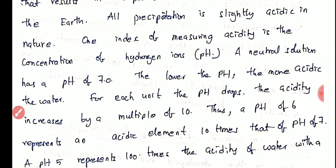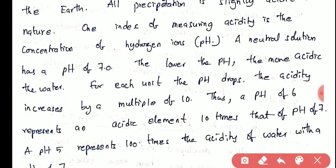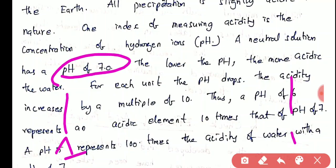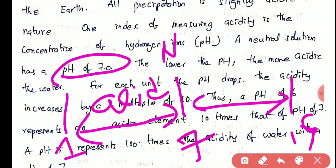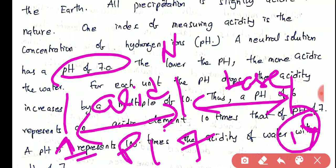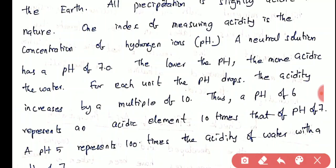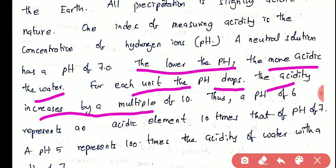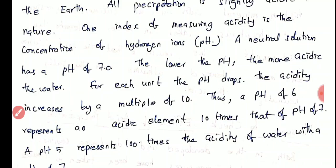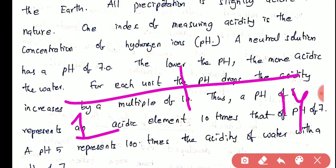The neutral solution has a pH value of 7. There is a scale from 1 to 14 — 7 is neutral, from 1 to 7 it is acidic, and from 7 to 14 it is basic. The pH value is essentially the concentration of hydrogen ions. The lower the pH, the more acidic in nature.